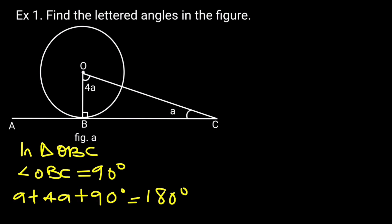Collecting like terms, A plus 4A is 5A. Which is 5A equals 180 degrees minus 90 degrees. So that 5A is equal to 90 degrees. Dividing through by 5, A is equal to 18 degrees.